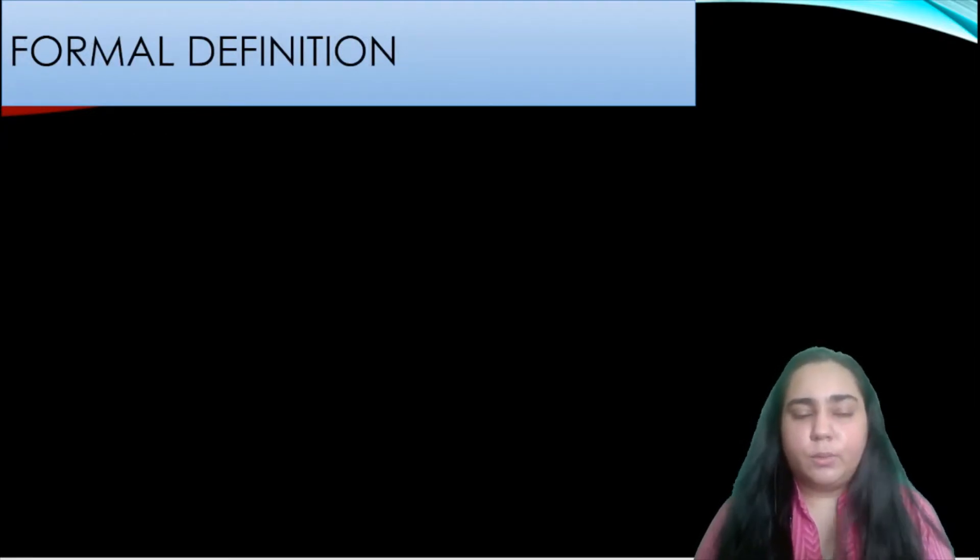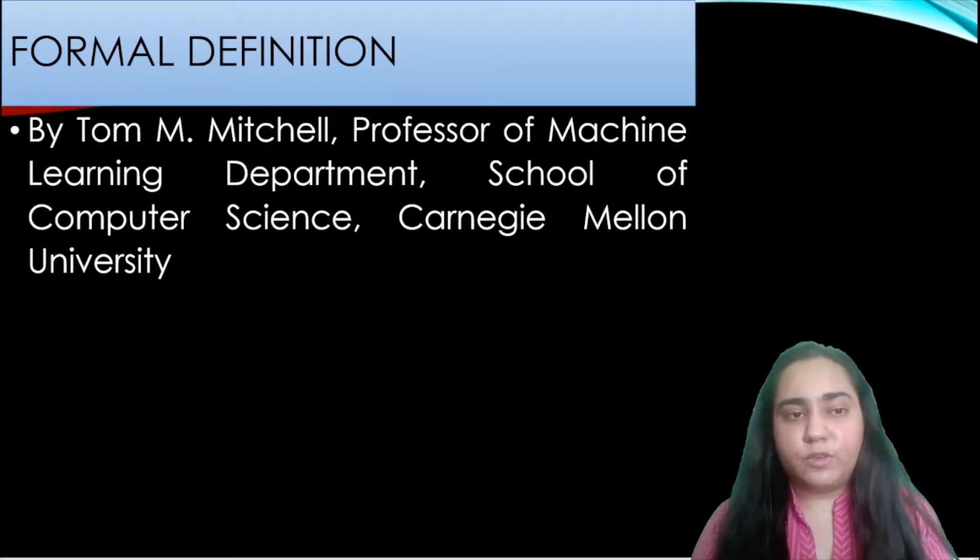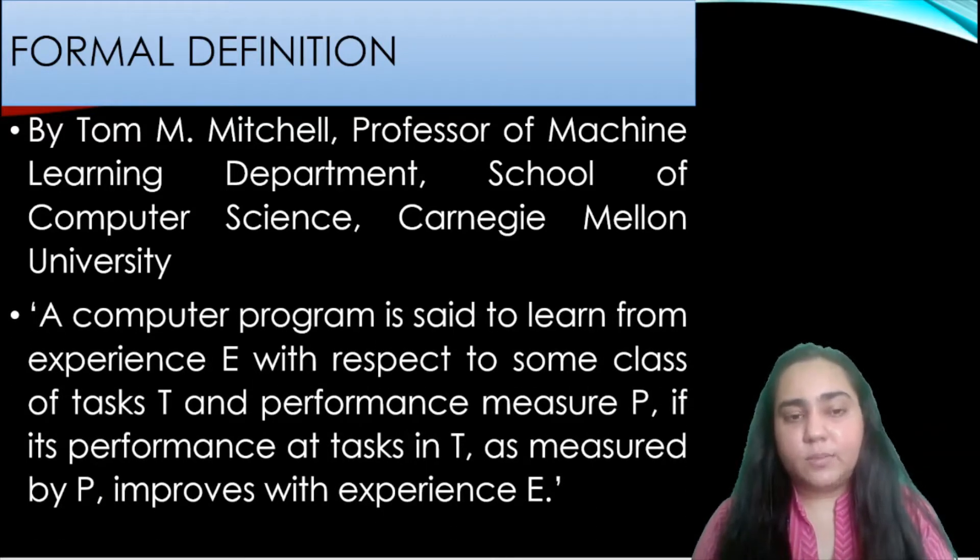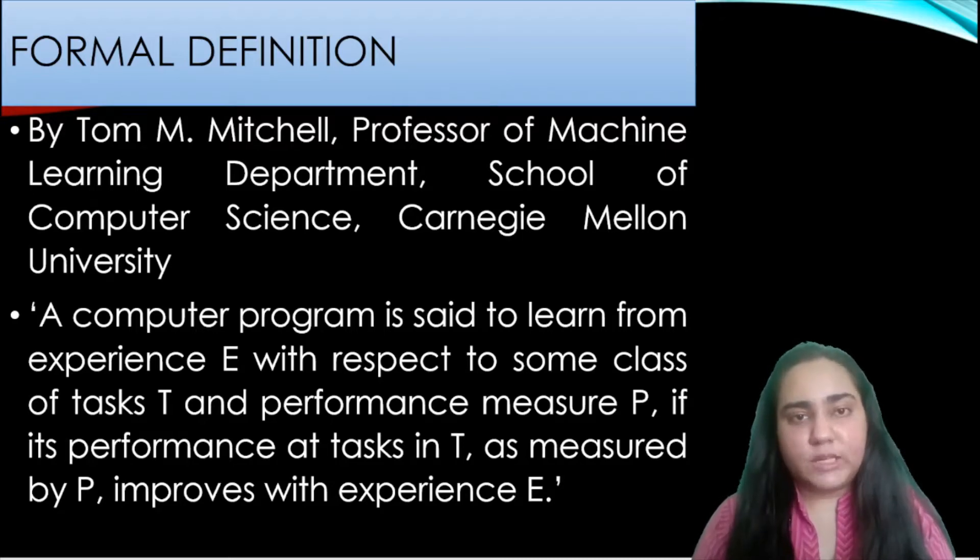Now let's start by giving a formal definition to machine learning. This definition is given by Tom Mitchell professor of machine learning department school of computer science in Carnegie Mellon university. He says a computer program is set to learn from experience E with respect to some class of tasks T and performance measure P if its performance at tasks T as measured by P improves with experience E.